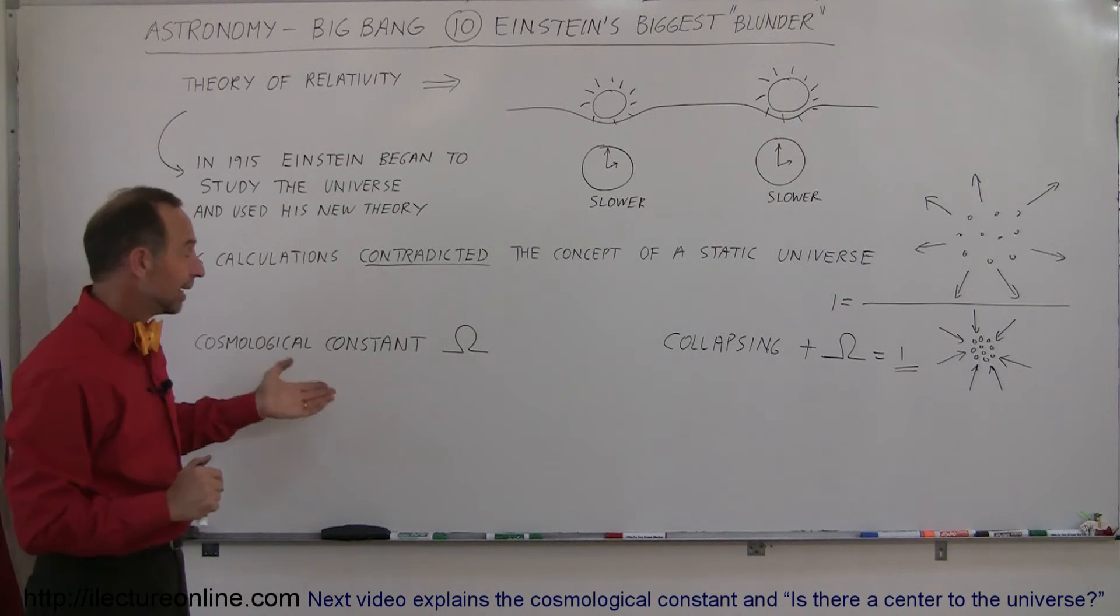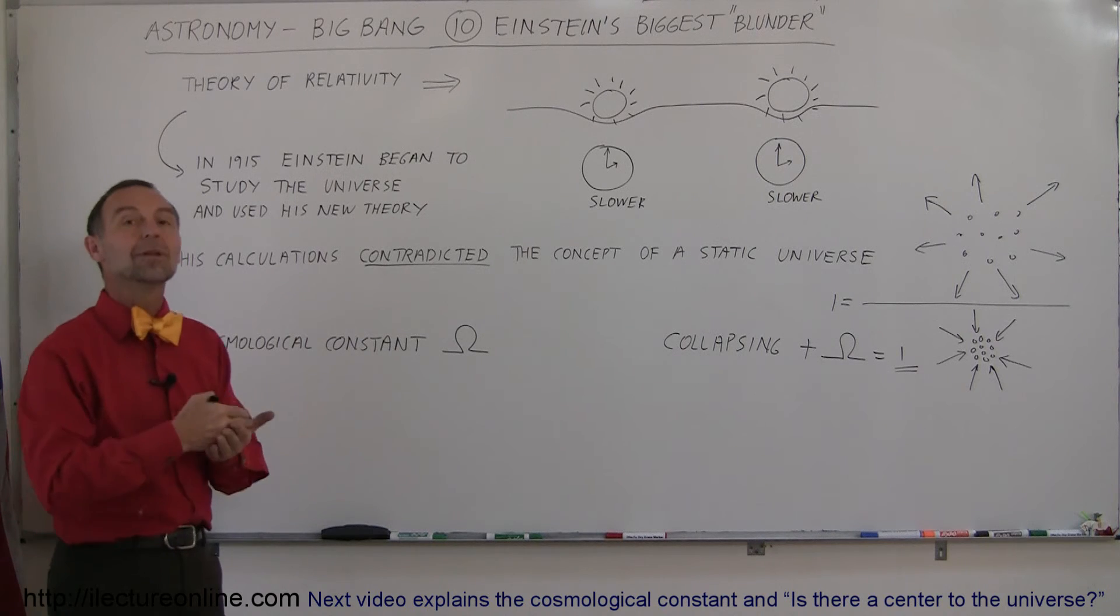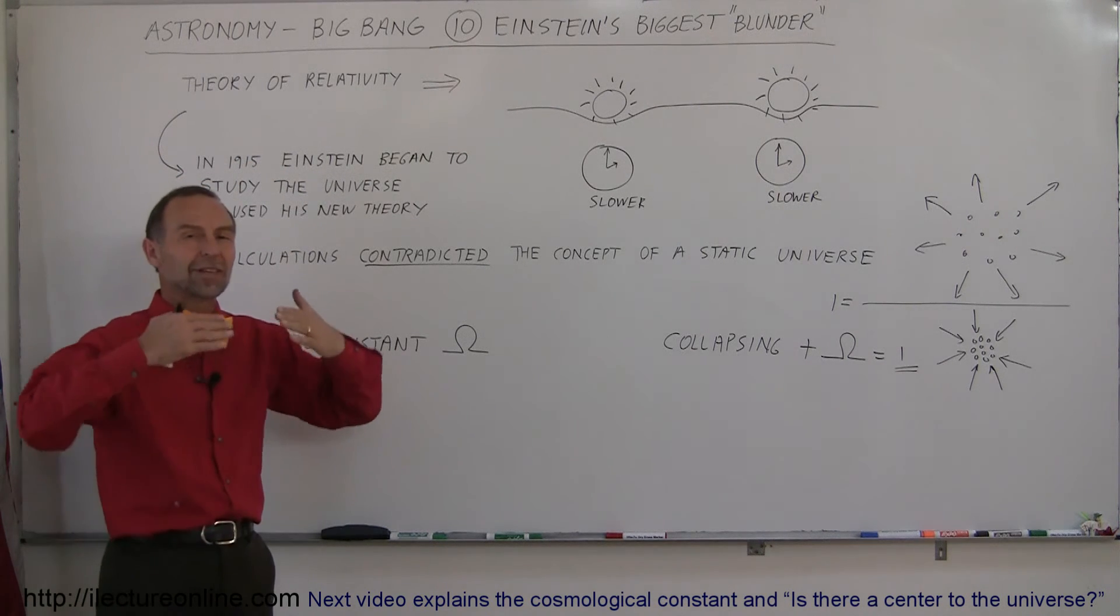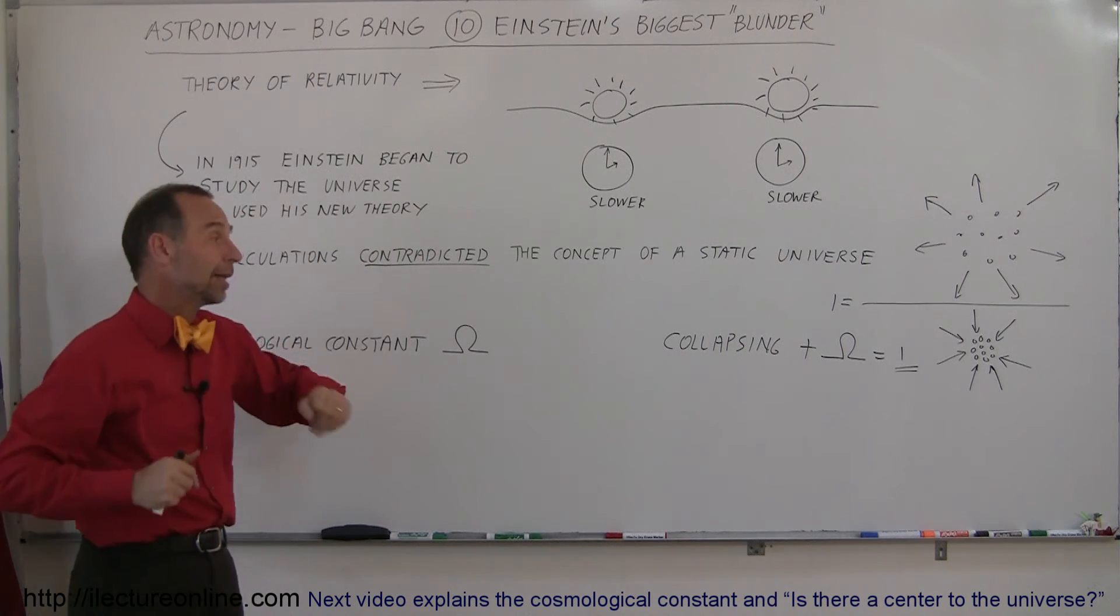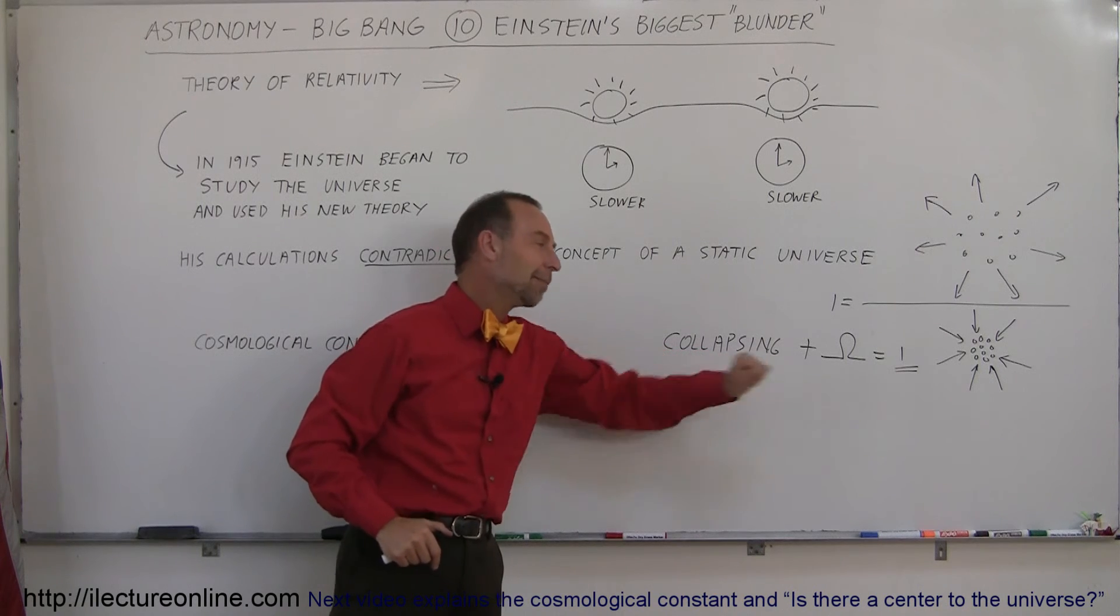It turns out, of course, that he was wrong. He realized later he was wrong. And of course, who was it that proved him wrong? Hubble himself. Not much later than 1915, when Hubble began to realize that galaxies were expanding away from each other and the whole universe was expanding, all of a sudden Einstein realized, wow, did I make a blunder here? Did I make a mistake?